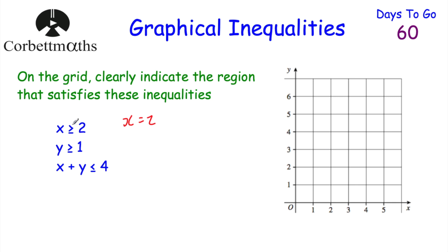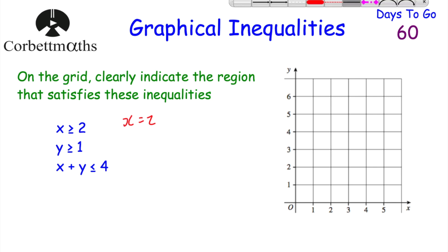Because it's greater than or equal to: if you have greater than or equal to, or less than or equal to, whenever you draw the line you draw a solid line. If you've just got greater than or less than, you draw a dashed line. So because this is greater than or equal to, we're going to draw a solid line — the line x equals 2. The graph of x equals 2 is a vertical line that passes through the x-axis at 2, so it'd be this line here.